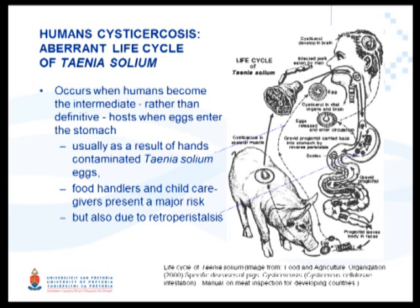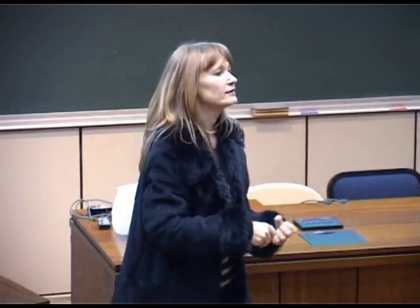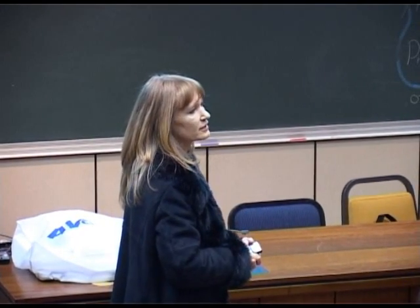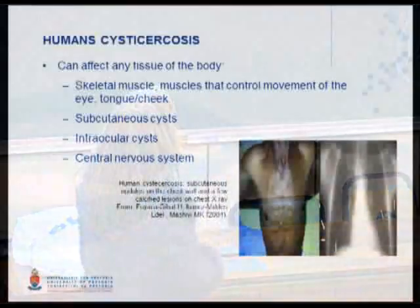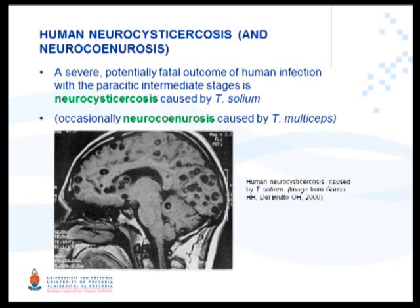Another route is retroperistalsis, where a proglottid moves from the small intestine back into the stomach and eggs enter the human being across the intestinal wall and enter the tissues. Human cysticercosis generally occurs in skeletal muscle and subcutaneous cysts. There was a case diagnosed in South Africa in 2004 - you can notice those little nodules. This patient was treated and then came back again, having reinfected himself. Neurocysticercosis is the worst outcome of this disease in human beings, with cysts in the brain causing epilepsy and other neurological symptoms.